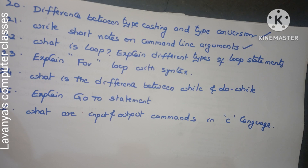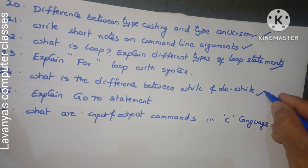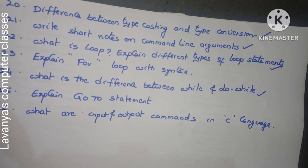Next: what is a loop? Define a loop. Explain the different types of loop statements — just entry control loop and exit control loop. And explain the for loop with its syntax — what is a for loop, how does it work, and what is the syntax — that is for a short answer question. What is the difference between while and do-while? It is a very important question for short answer as well as long answer. Explain the goto statement and what are the input and output commands in C language.